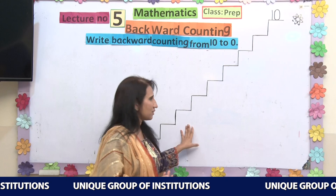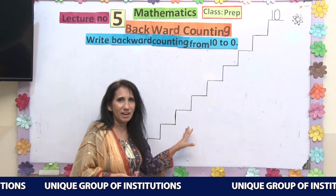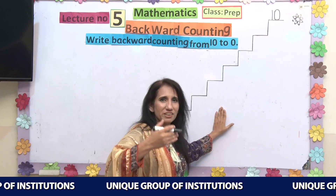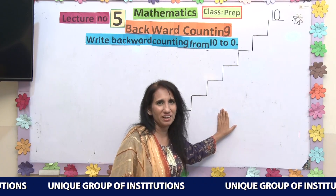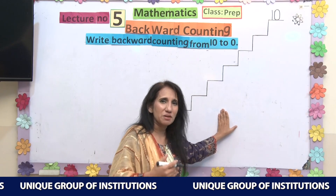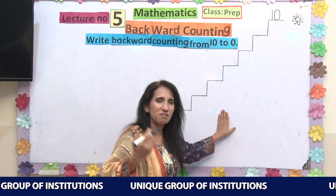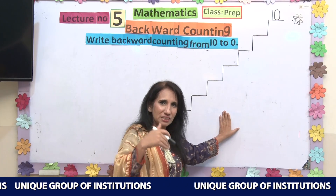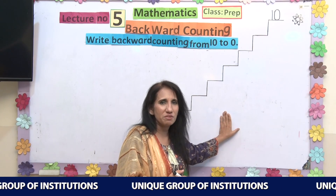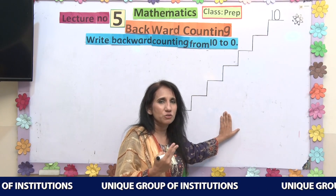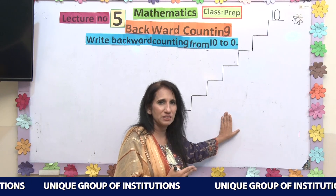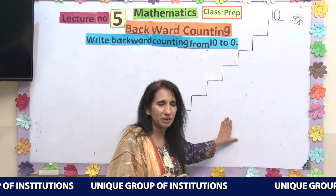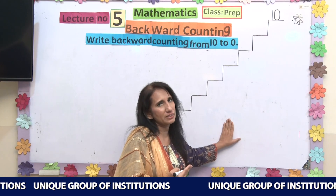You can see the stairs here. I have made these stairs. When the stairs go up, they also go down. This means that you are going forward and then you are going backward — going down. In the same way, we have two types of counting. We have learned forward counting and now I am teaching you backward counting. How do we start?